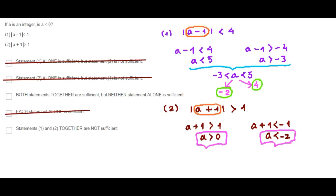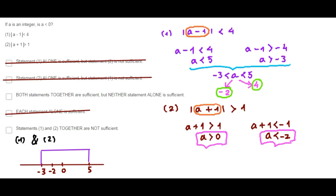Now we're going to use both statements together. From statements 1 and 2, I'm going to draw a number line with 0, 5, negative 2, and negative 3 marked. From statement 1, we know that a lies between negative 3 and 5. From statement 2, we know that a is greater than 0 or a is less than negative 2.